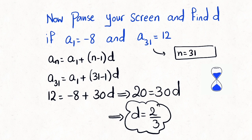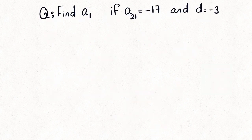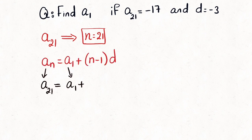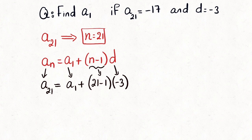Another type of question is to find a1, given a21 equals negative 17 and d equals negative 3. We use the same nth term formula, replace the values, solve the equation, and find the value of a1.